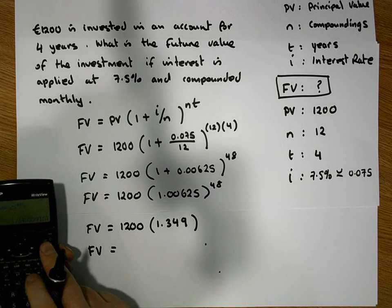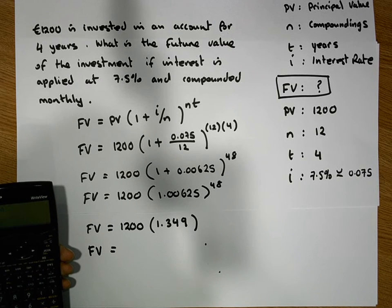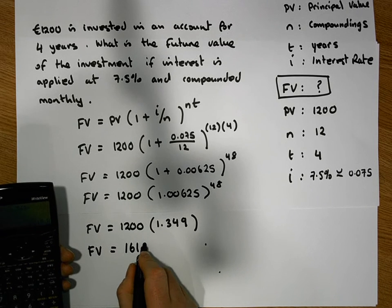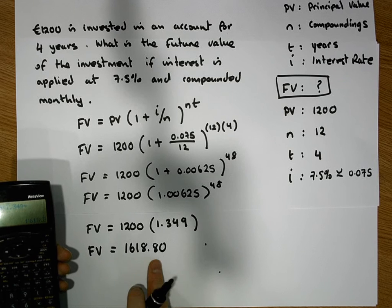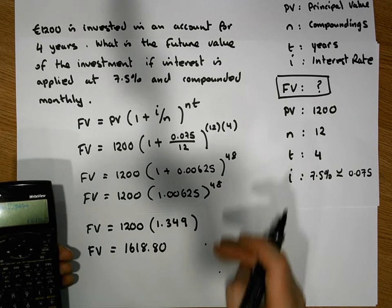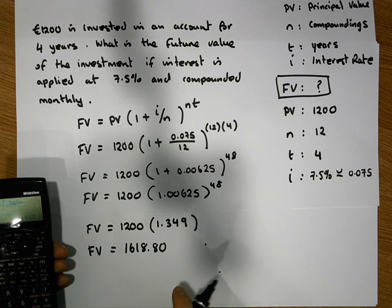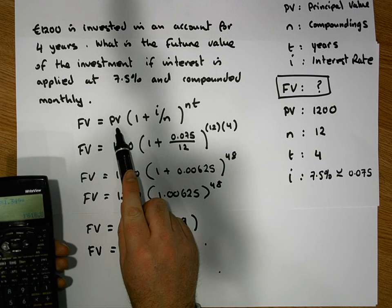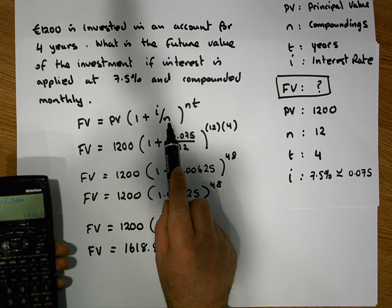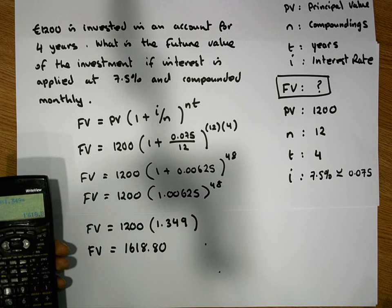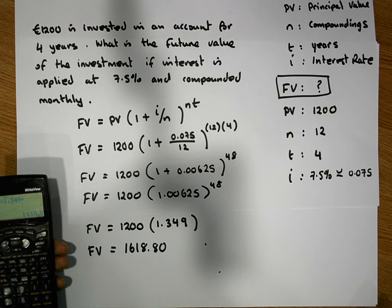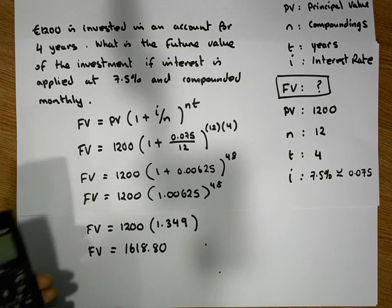So the future value equals 1200 multiplied by 1.349, which gives us a future value of €1618.80. Note there is some rounding involved, so this isn't exact. To calculate the future value of an investment, we need to know the principal value, the interest rate, the number of compoundings per period, and t — the number of years invested. This was Jonathan Lambert with the Mathematics Development and Support Service at the National College of Ireland. I hope these videos were helpful — thank you!